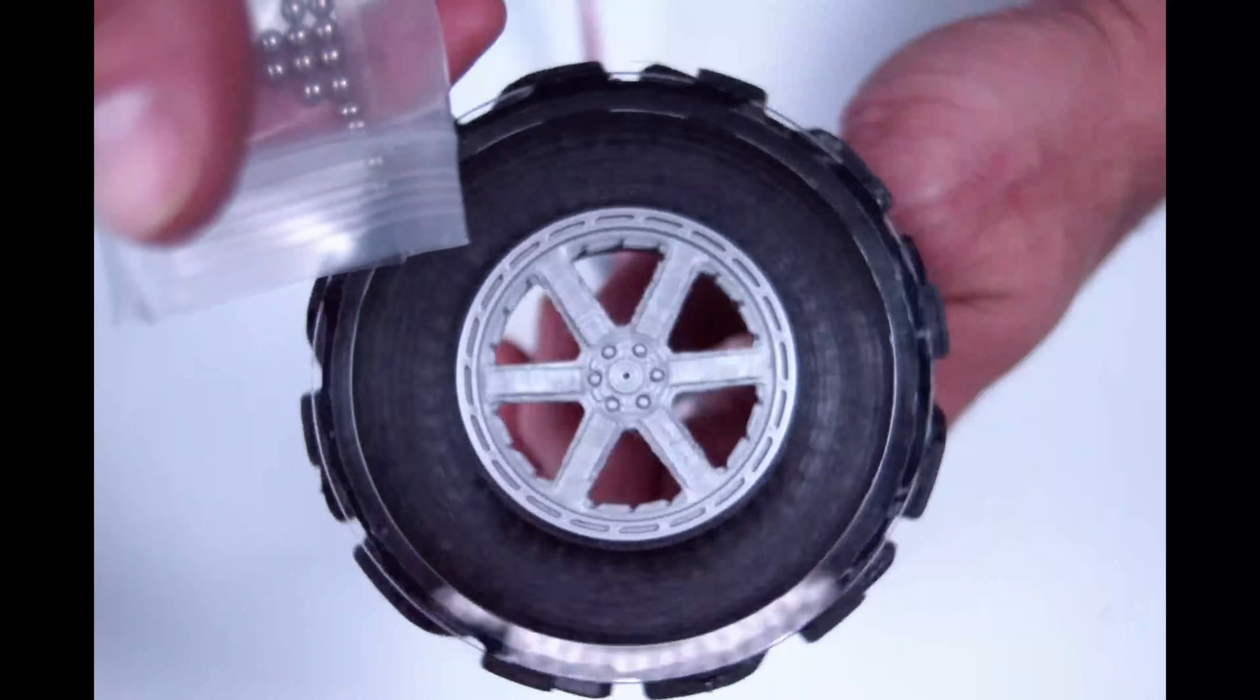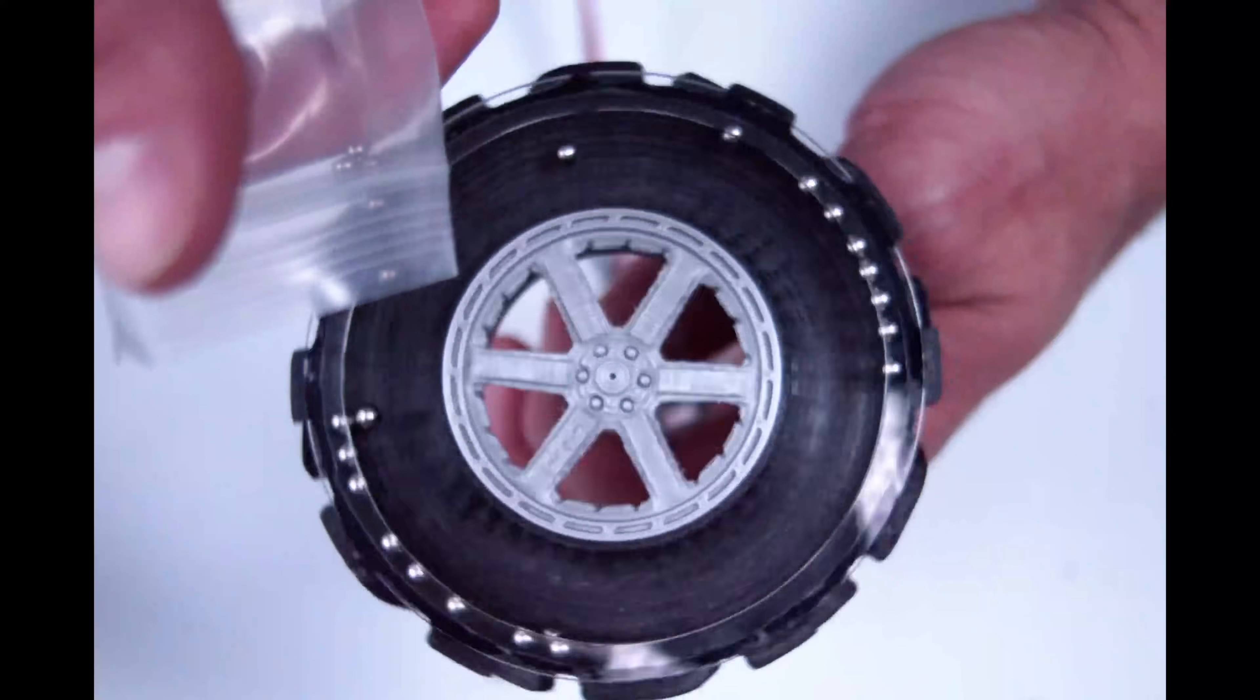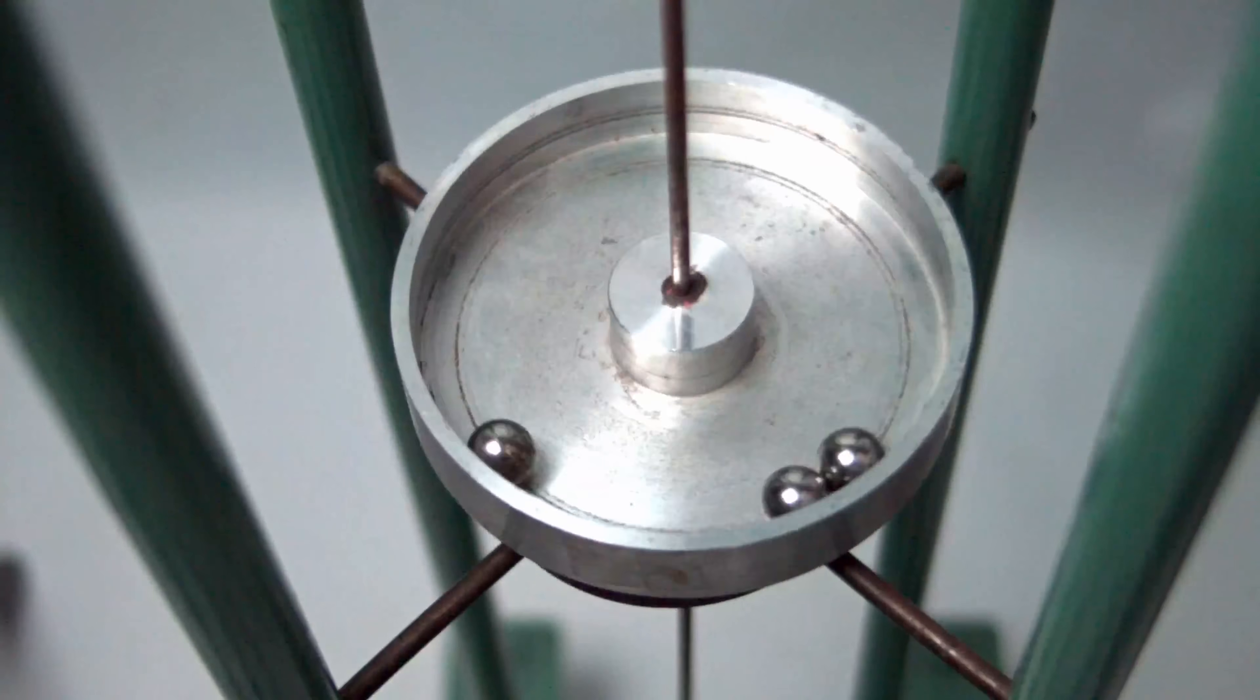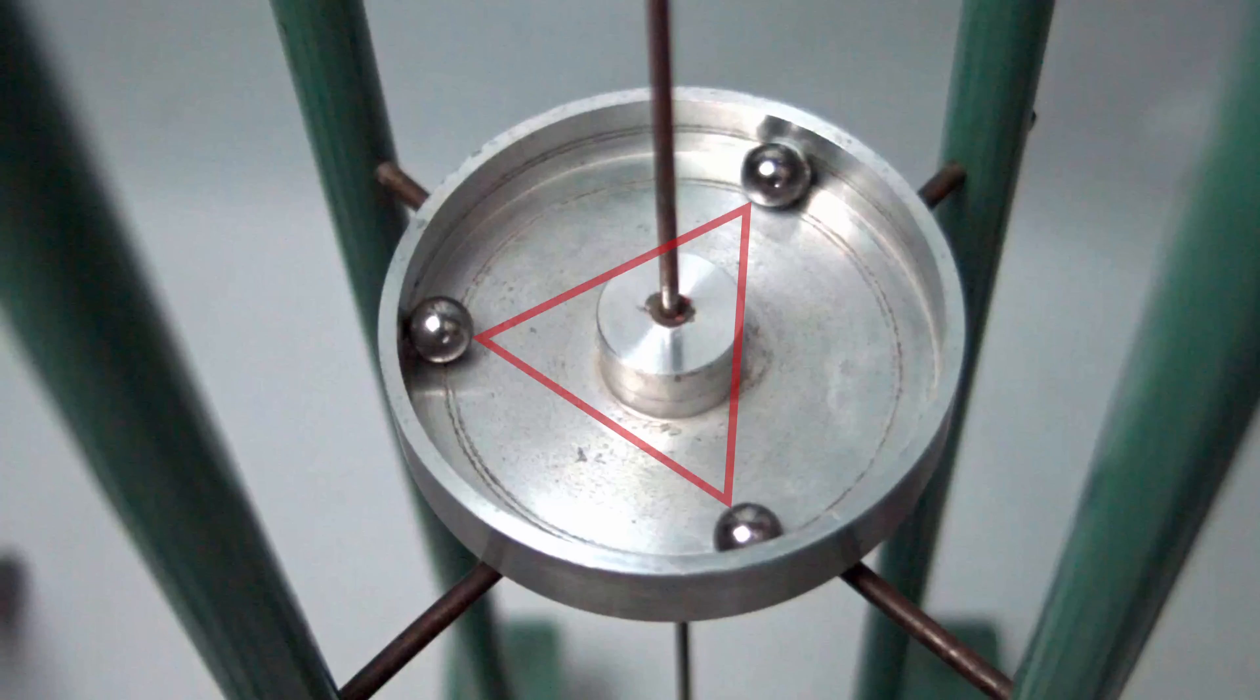This model of a car tire won't stop wobbling until I do something really counterintuitive. When I drop a few steel balls in there, suddenly it balances itself. But that's weird, isn't it?